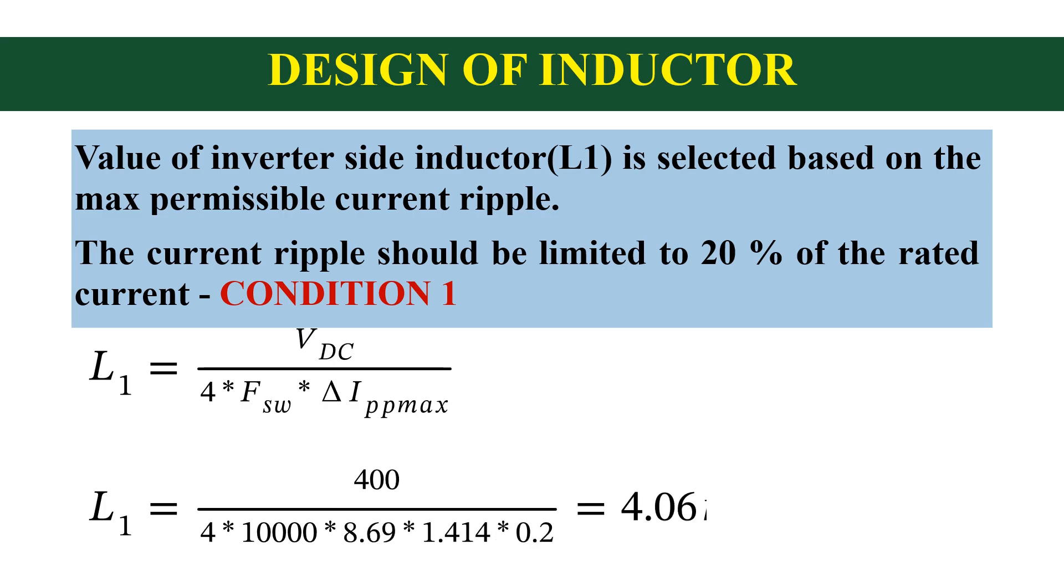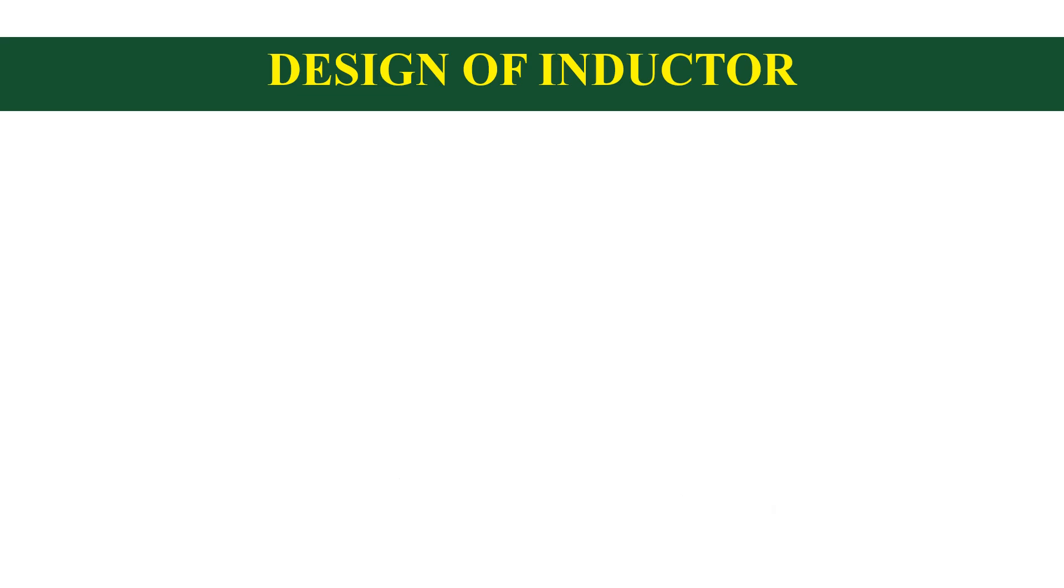Now substitute the values from specifications, we will get L1 is equal to 4.06 millihenry. Now for the design of grid side inductor, we have our second criterion.